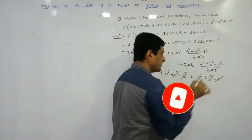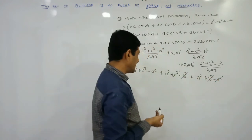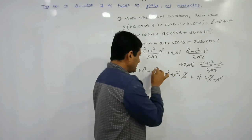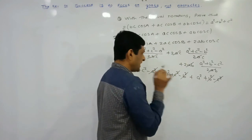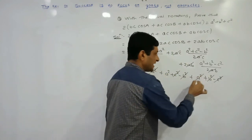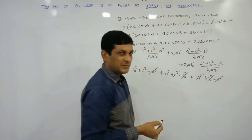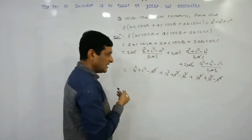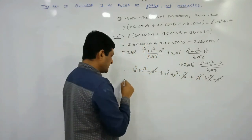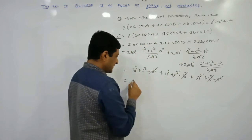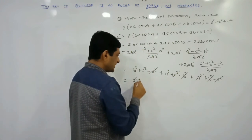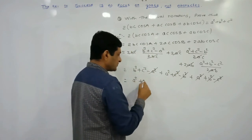We can observe that −c² and +c² cancel, −b² and +b² cancel, −a² and +a² cancel. The remaining terms are a² + b² — and the simplification continues to give the required result.